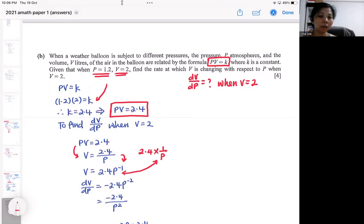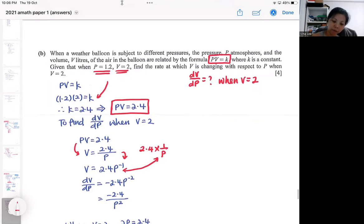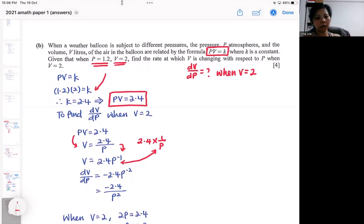Doing your differentiation is not difficult. You don't even need quotient rule or product rule. You just need bring down power minus power. Once you make V the subject, it's just bringing down power minus power, and you get dV/dP. After you get your dV/dP, you need to input something. You need to input the value of P.